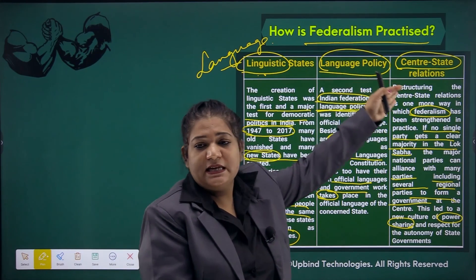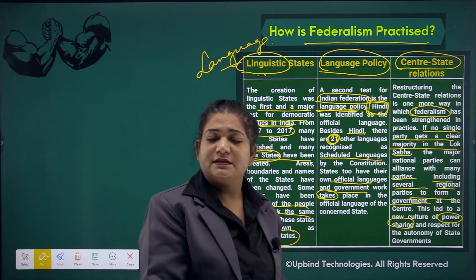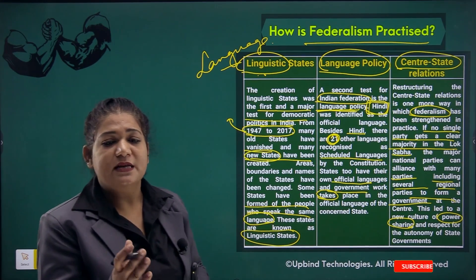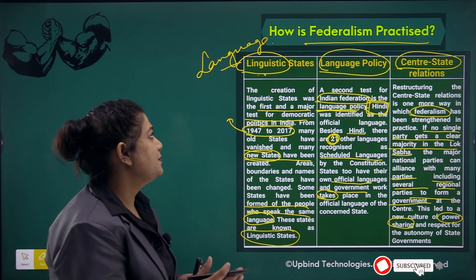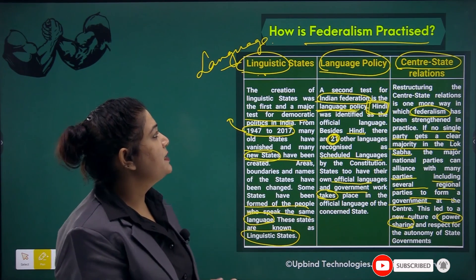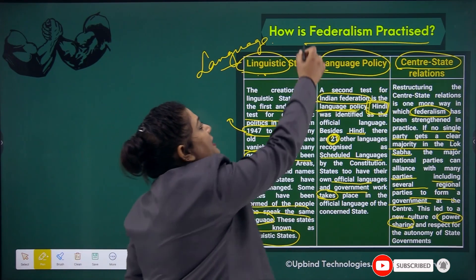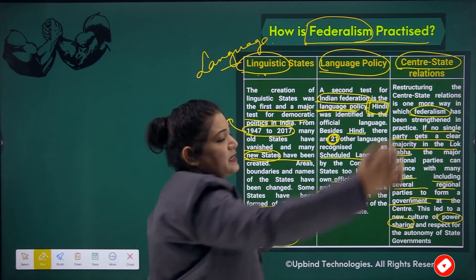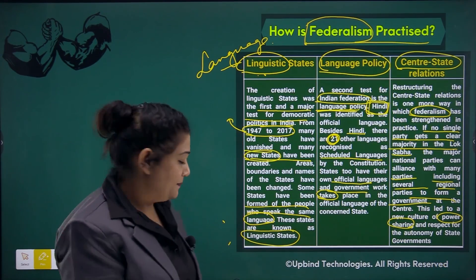So from this basis — linguistic states, language policy, and center-state relationship — federalism can be practiced. These are the key ways in which federalism is practiced in India.